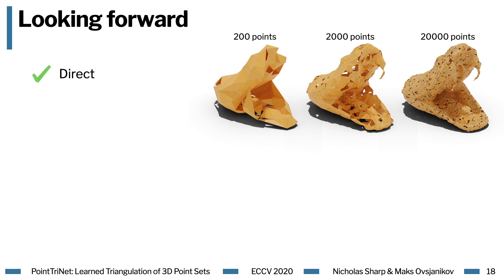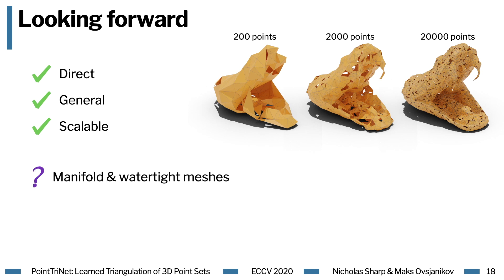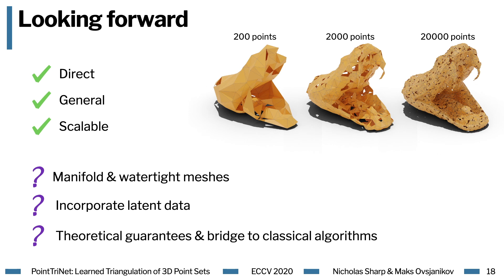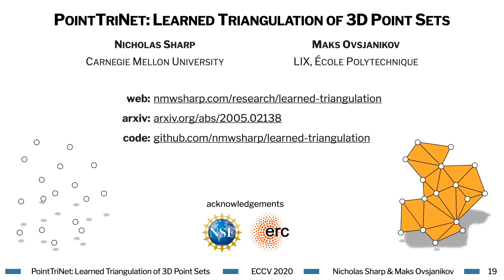Wrapping up, we've presented PointTriNet, the first deep method to tackle the problem of point set triangulation. It's direct, general, and scalable, opening the door to many exciting applications leveraging triangle meshes. Unlike implicit representations, we have to work hard to get manifoldness in our output, and future work could continue adjusting architecture and losses to improve manifoldness and watertightness. We're also interested in using latent data at points to guide the triangulation process, and more broadly bridging the gap between learned techniques and classical methods with theoretical guarantees. Thank you for your time.